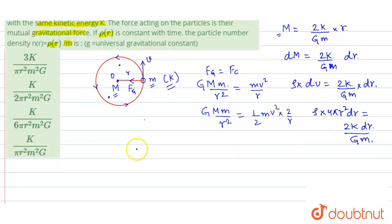Now from here we can find out the density function. So density will be simply equals to k divided by 2 pi G small m r squared.